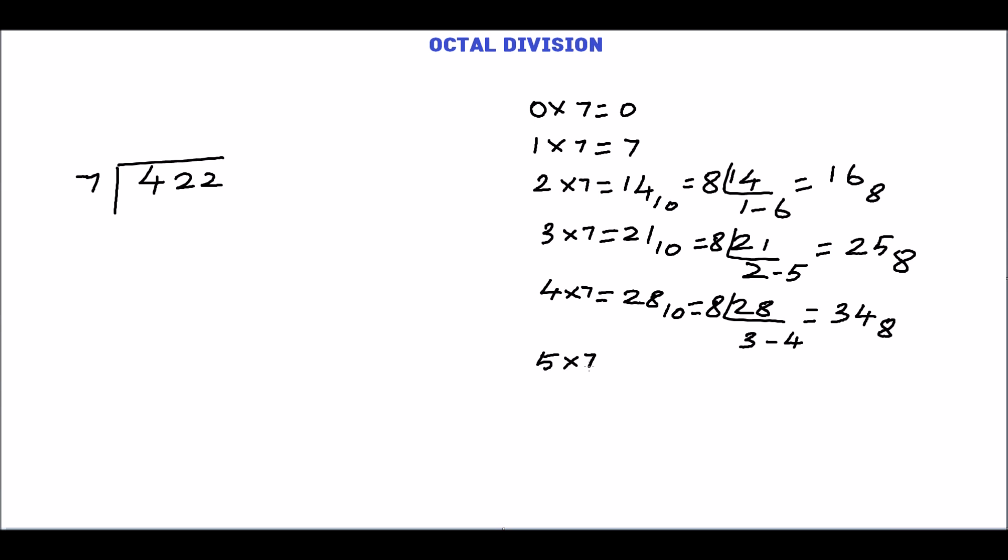5 times 7 is 35 in decimal. So divide this 35 by 8. Quotient is 4 and the remainder is 3. So the equivalent octal number is 43.